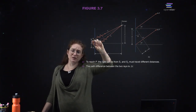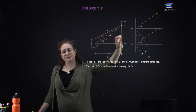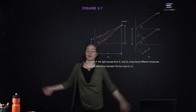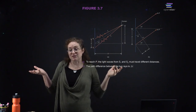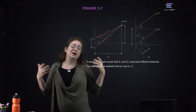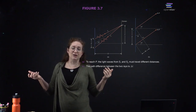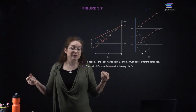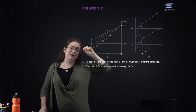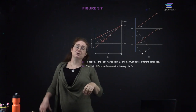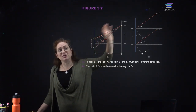To get this diffraction effect, the slit must be on the order of the wavelength of light — on the order of 10 to the negative 7 meters, or micrometers — really small slits. If you have a slit on the order of a micrometer and your screen a meter away, it's a pretty good approximation that the screen is far away.